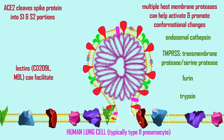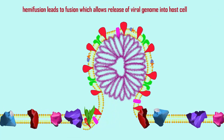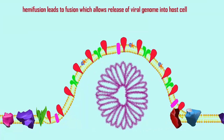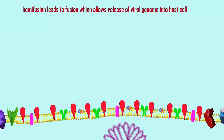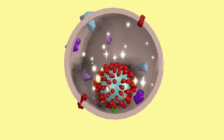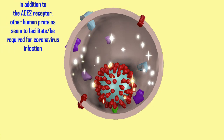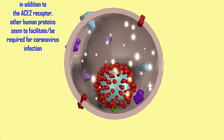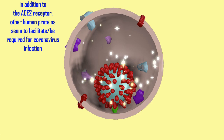This action by the host proteases is often required to trigger certain events like the fusion of the viral envelope with the cell membrane, or the changes in protein conformation which allow this cell fusion. There are a number of human enzymes which are proteases or peptidases which perform this task for the virus, enabling it to further the infection cycle.